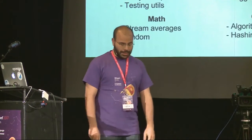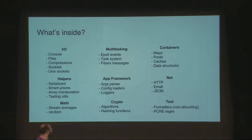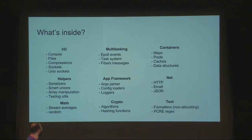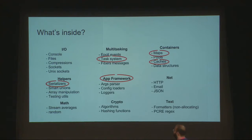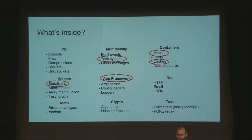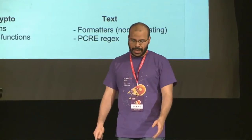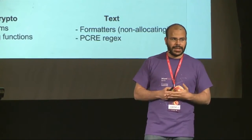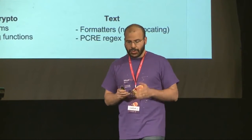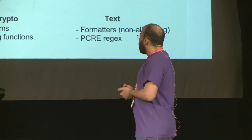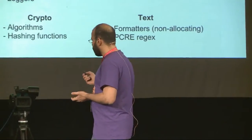There is a lot inside Ocean — there are around 550 modules, more or less. My favorite ones are these five, but there's no time to talk about all five. The task system is a nice way to manage your application's code flow — it's fiber on steroids. There are the maps and caches, which are basically hash sets and hash maps, more predictable than associative arrays. As for the serializer and the app framework, we'll talk about those quickly as an example of what's in Ocean.